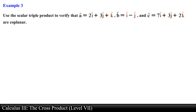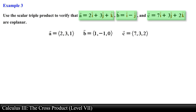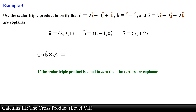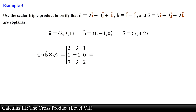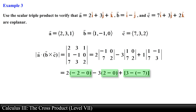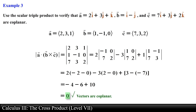Use the scalar triple product to verify that vectors A, B, and C are coplanar. We are given three vectors in standard unit vector form; let's rewrite them in component form. We can determine if the vectors are coplanar by calculating the scalar triple product — if the result equals 0, the vectors are coplanar. We set up our determinant, find the minors, compute the determinant of each 2 by 2 matrix, and simplify. We obtain 0 as our final answer, which means the volume of the parallelepiped is equal to 0, confirming that all three vectors are coplanar.